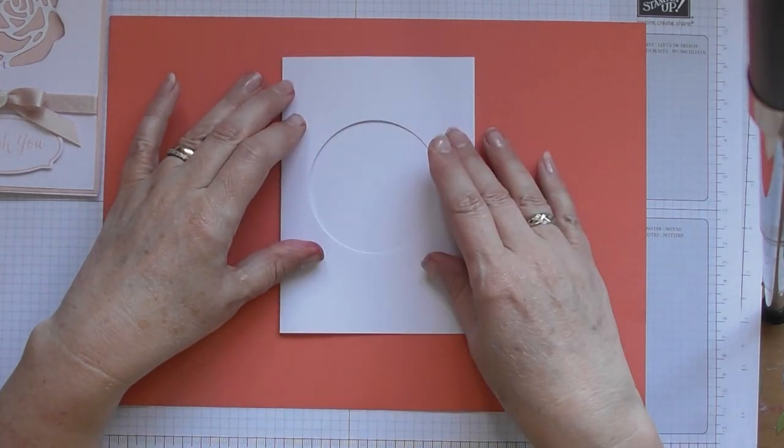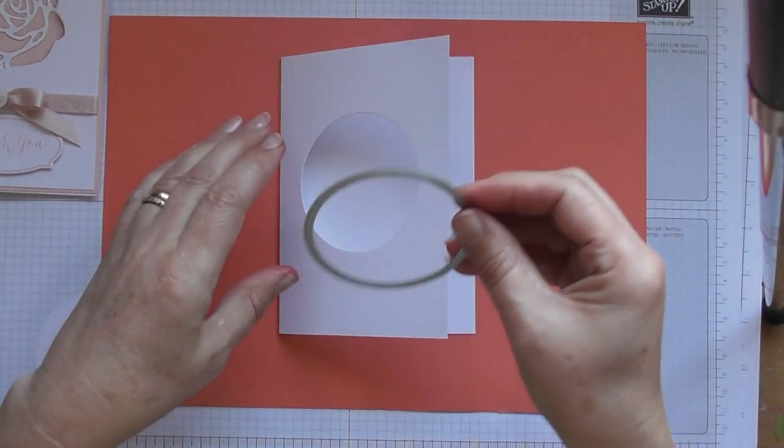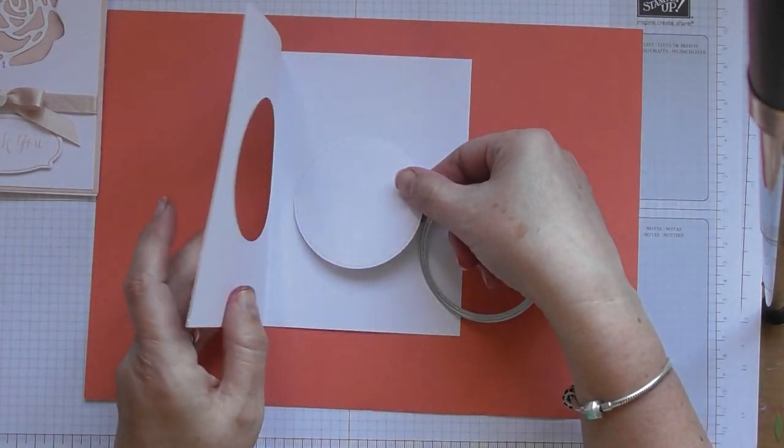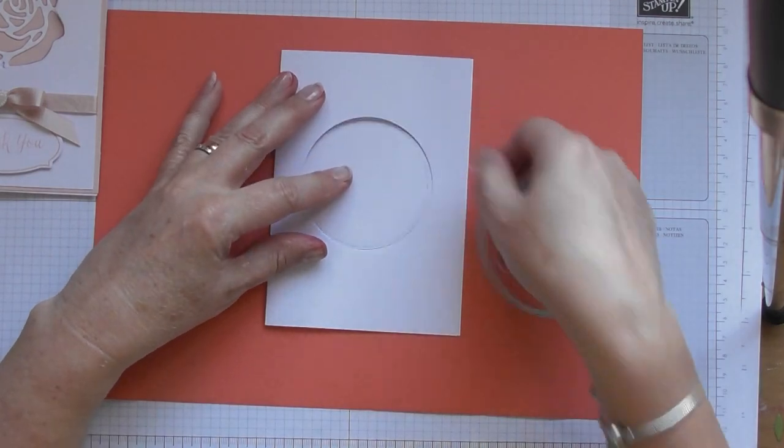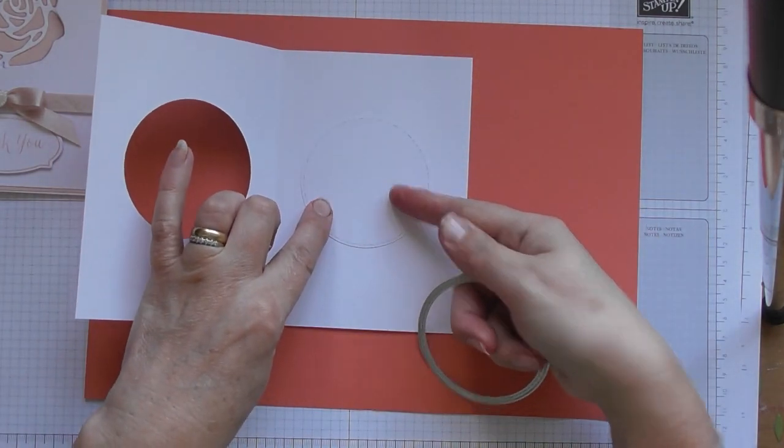You can either use the piece you've die cut out and stamp on that, place it back through your aperture, and secure it into place, tape it into place like that.